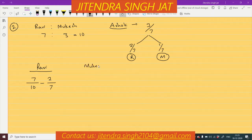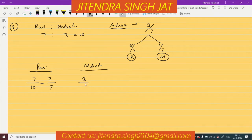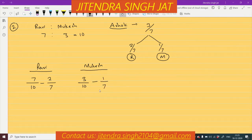Now for Mukesh: Mukesh's share is 3/10. And how much is Mukesh giving to Ashok? 1/7. So whatever Mukesh is sacrificing, we subtract 1/7 from his share.